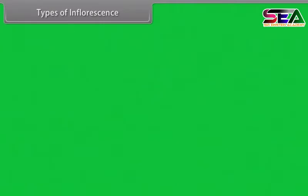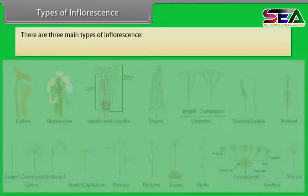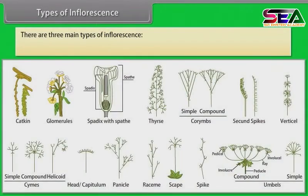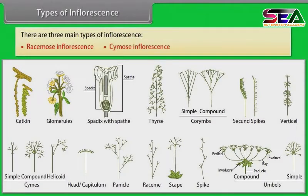There are three main types of inflorescence: racemose inflorescence, cymose inflorescence, and special types of inflorescence.